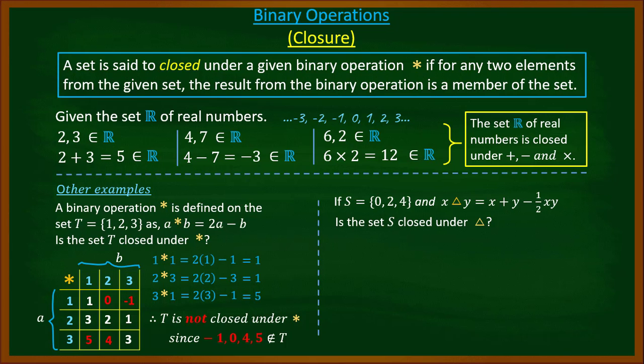This operation means you add x and y, then subtract half of the product of x and y from the result. To check closure, create a table. Please pause the video and create a table for this operation.